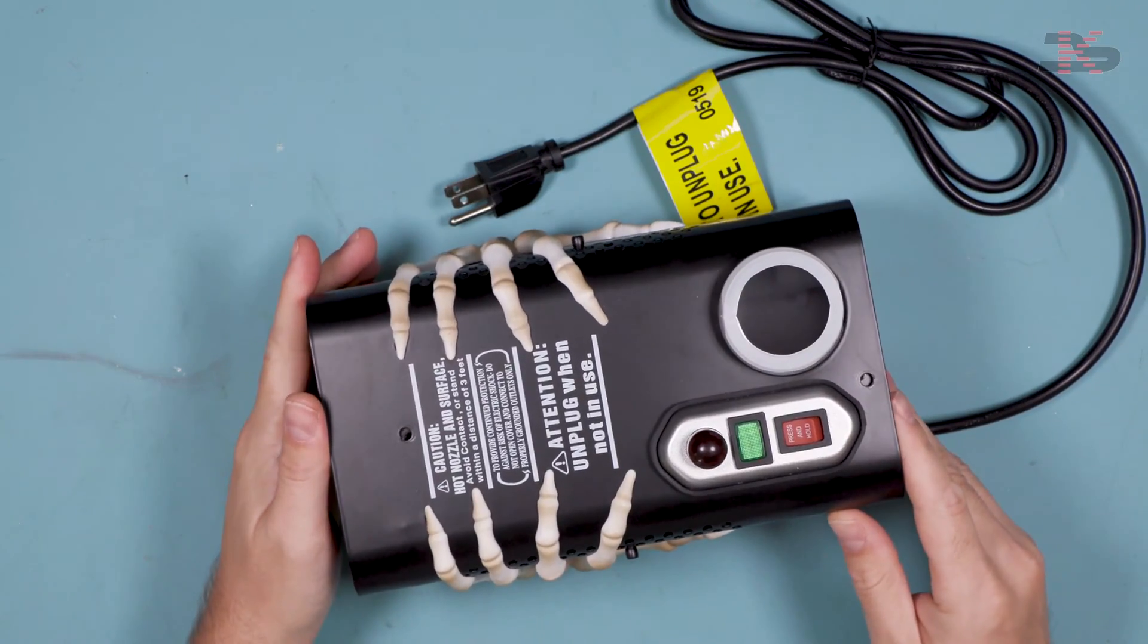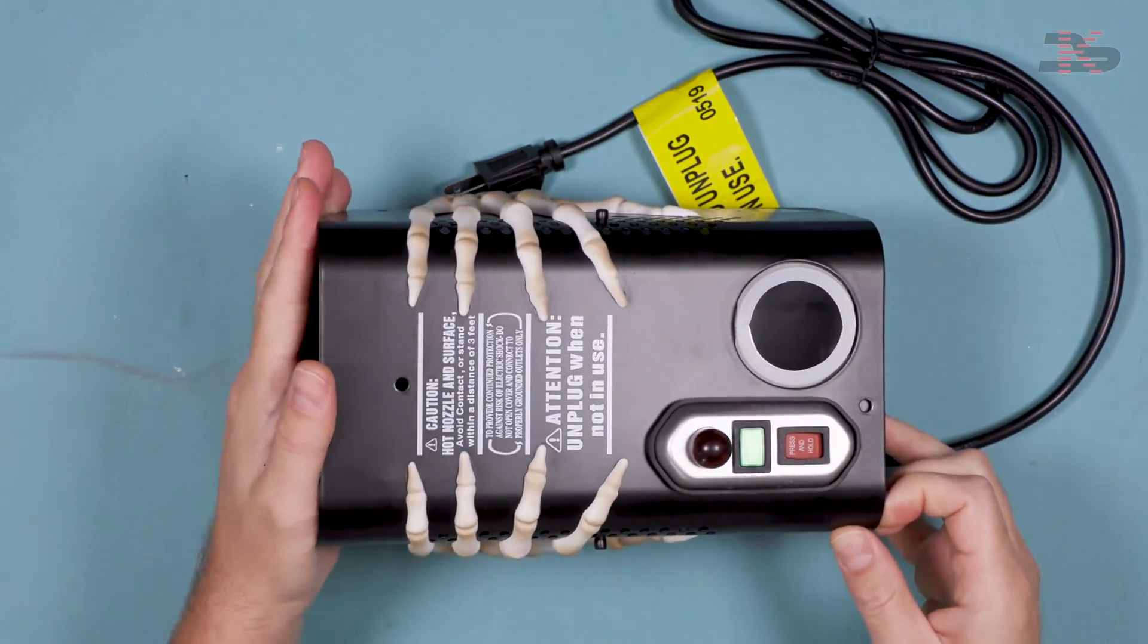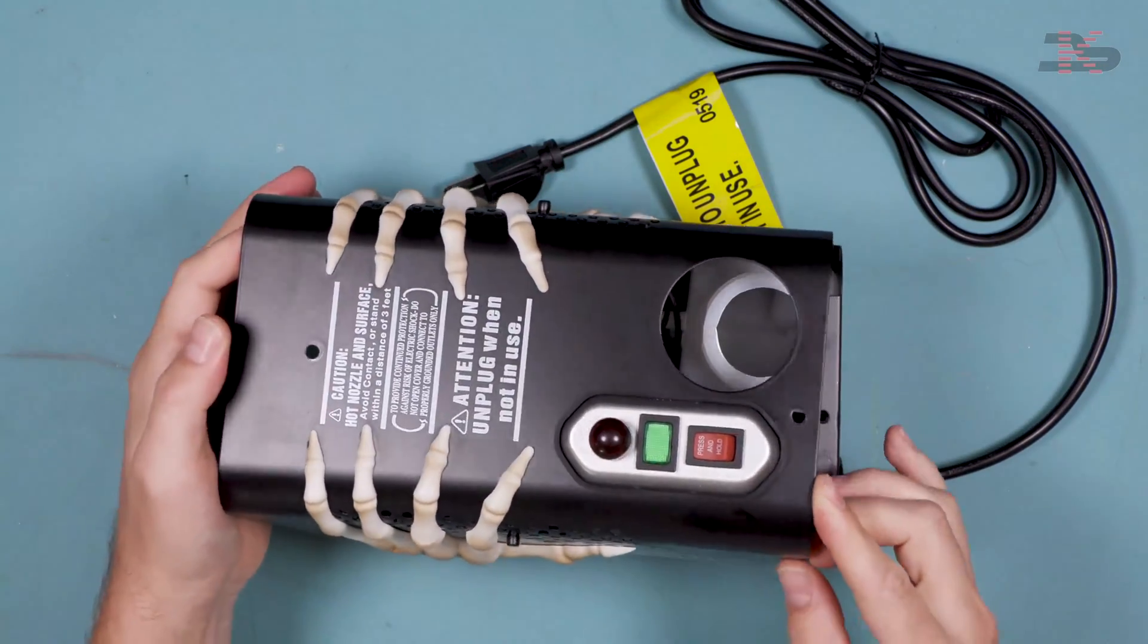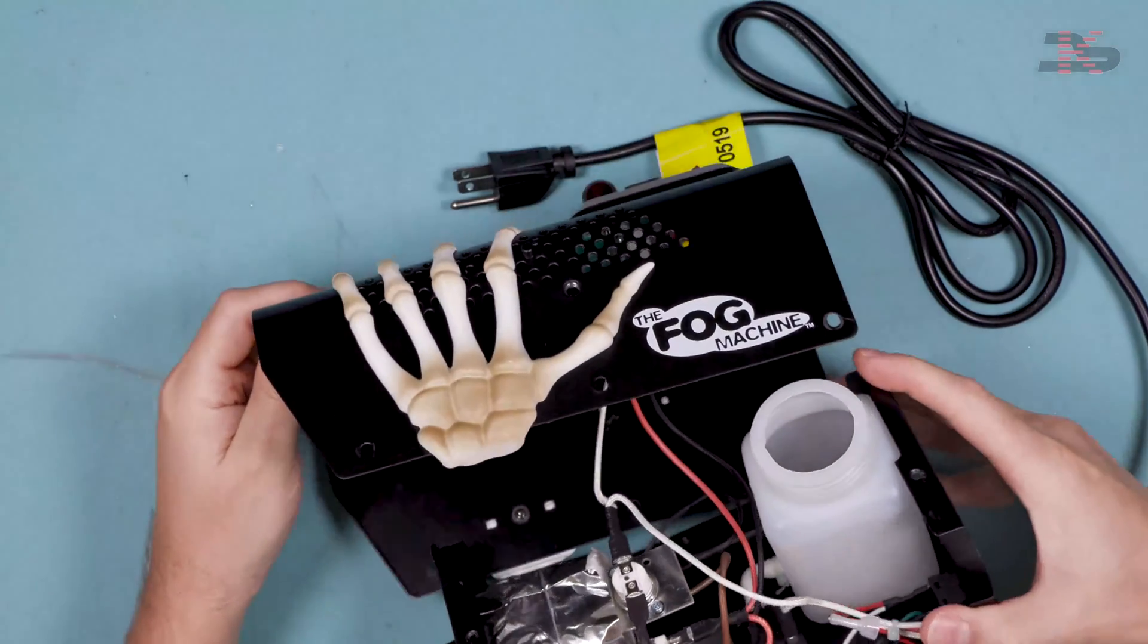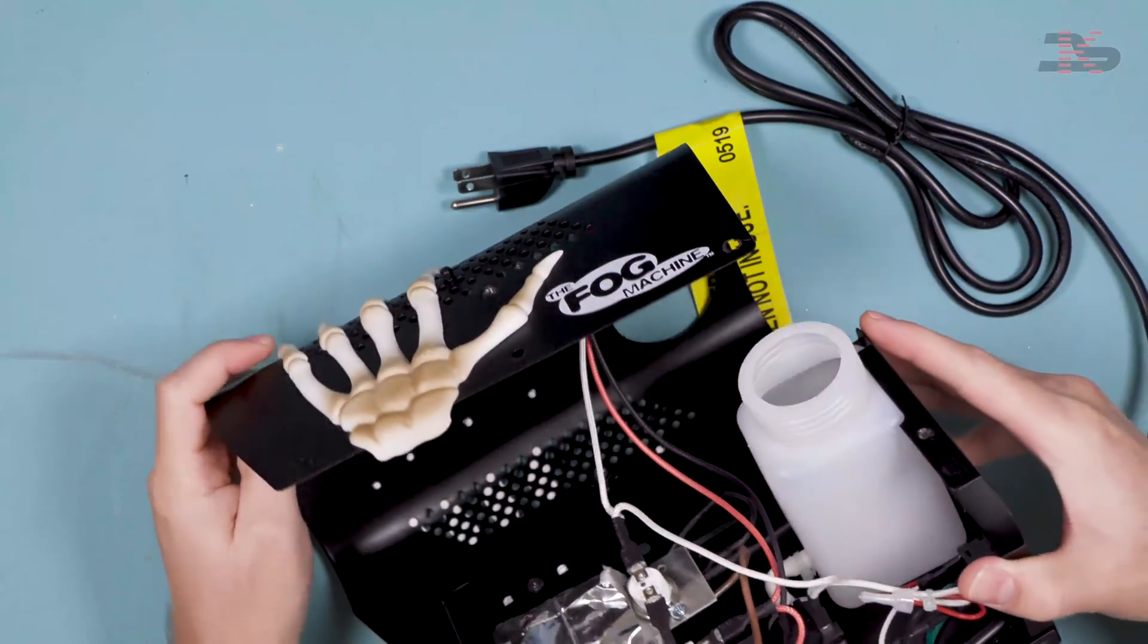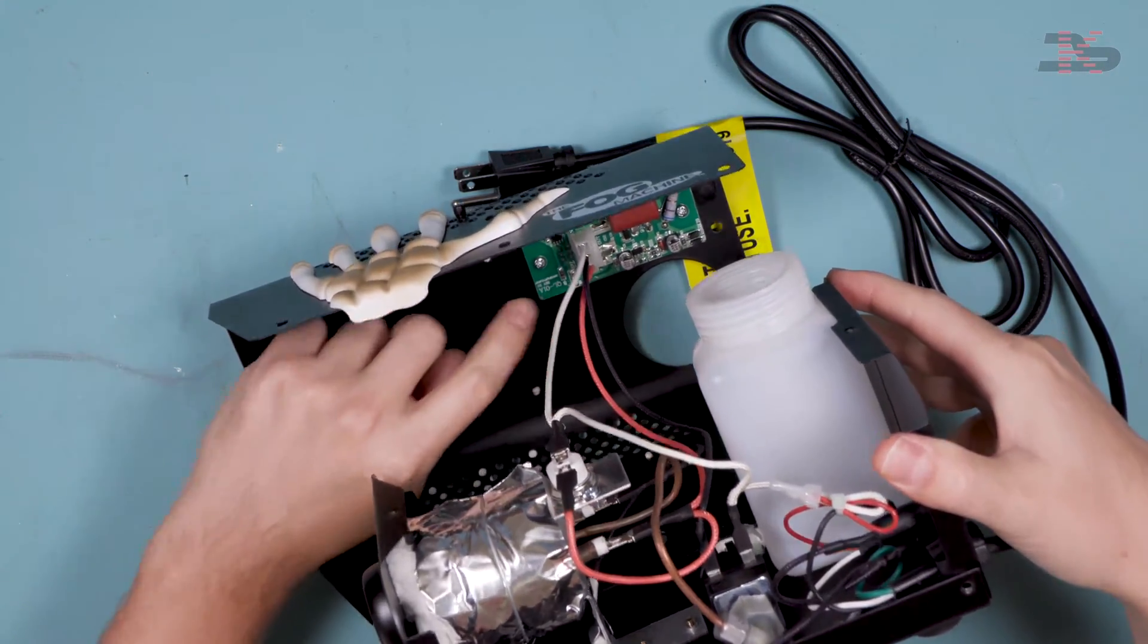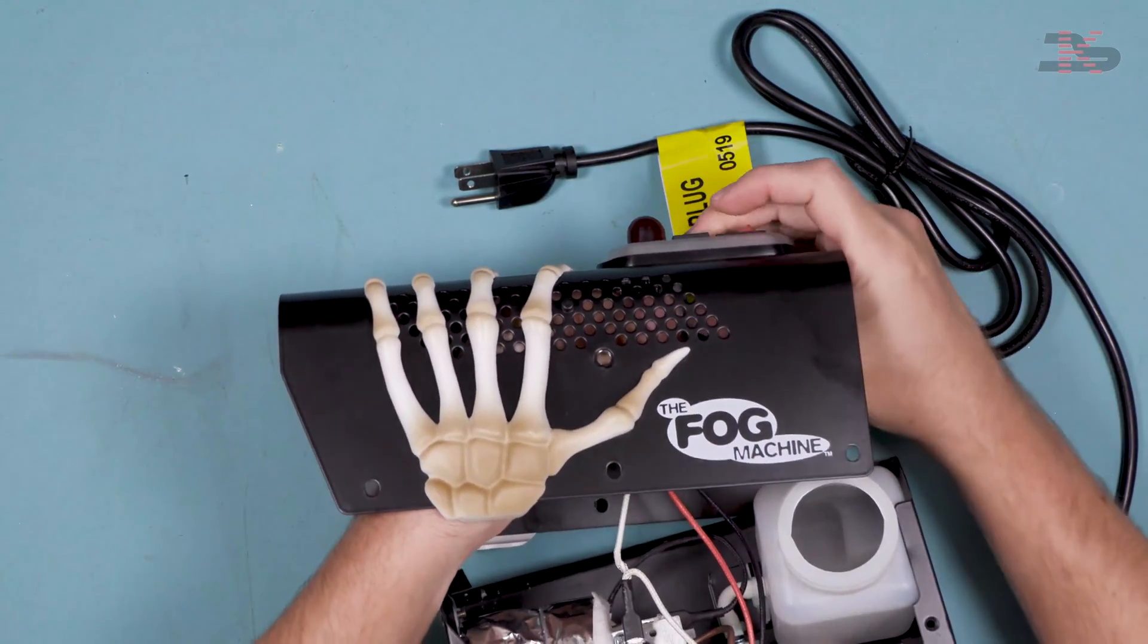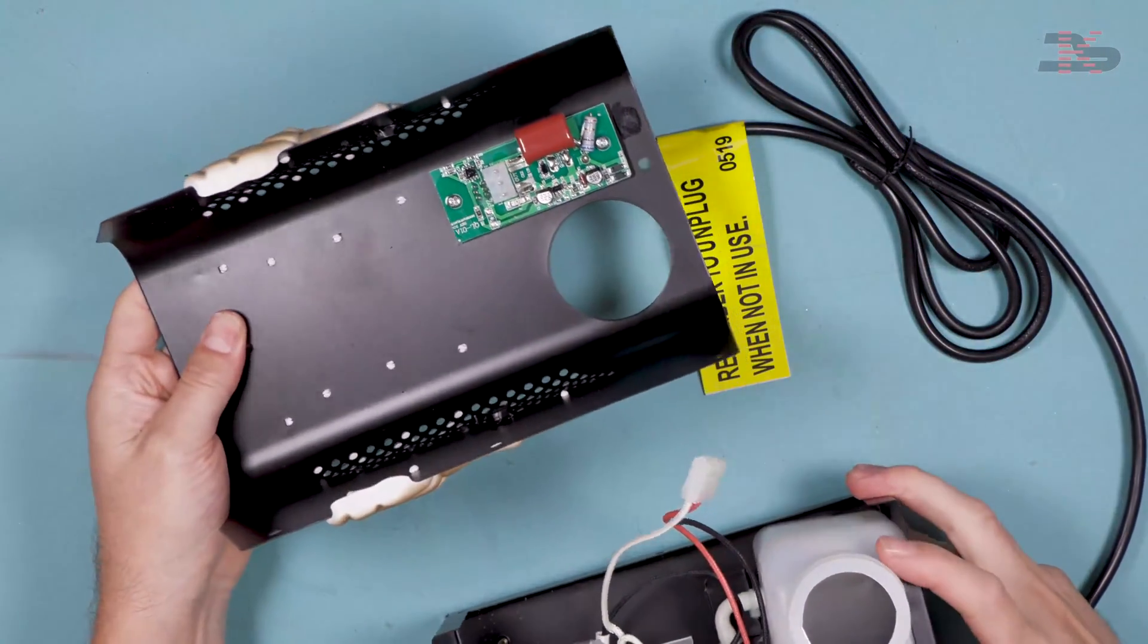Once that's done, we can remove the outer cover. And you're going to want to disconnect this connector from the top board. And then we can go ahead and set this aside.